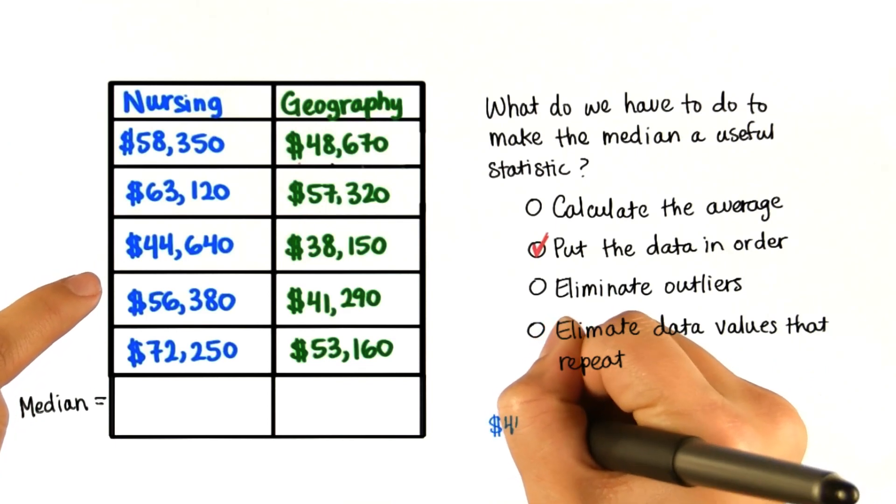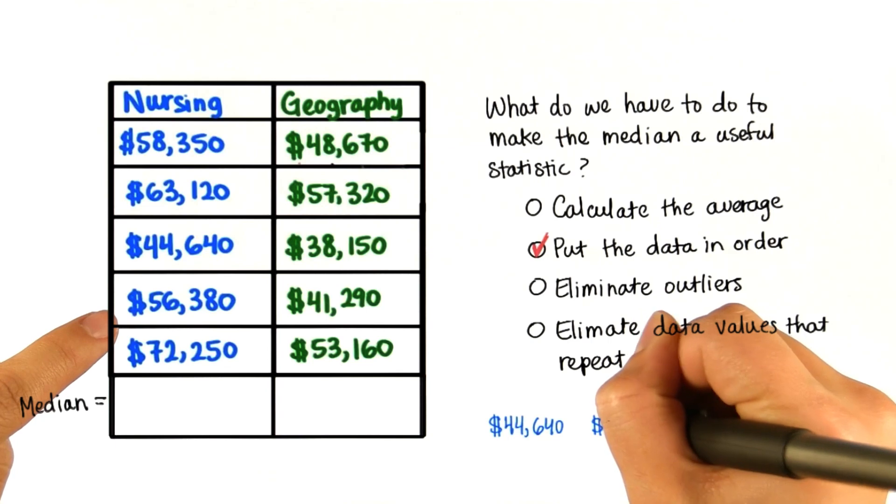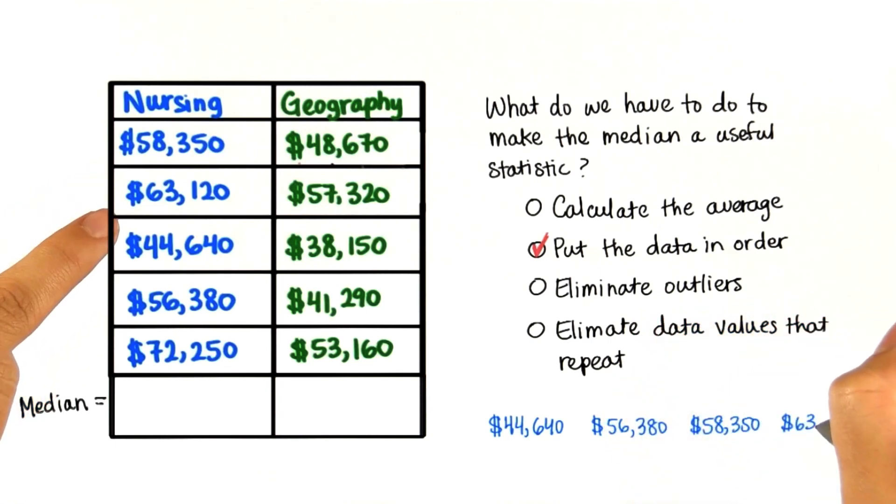So for nursing, the lowest salary is $44,640. Next is $56,380, then $58,350, then $63,120, and finally $72,250.